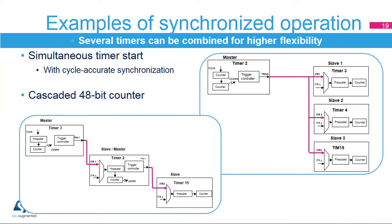Four timers can be simultaneously started, with a mechanism allowing the master timer to start slightly delayed to compensate for the master-slave link delay, achieving cycle accuracy. By combining the channels of timers 2, 3, 4, and 15, it is possible to have up to 14 synchronized PWM channels. A 48-bit timer can be created by cascading three timers, where the update event on counter rollover is used as the input clock for the following slave timer. Timer 3's counter holds the least significant 16 bits, timer 2's counter holds bits 16 to 31, and timer 15 holds bits 32 to 47.